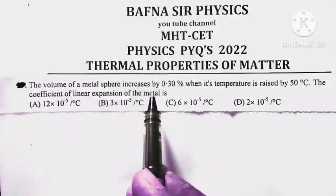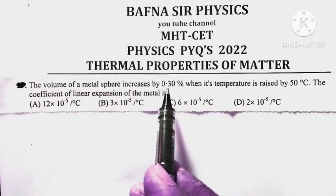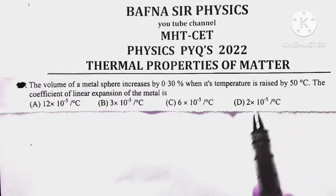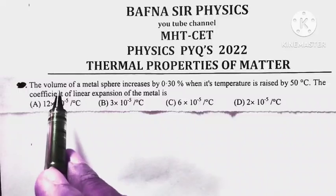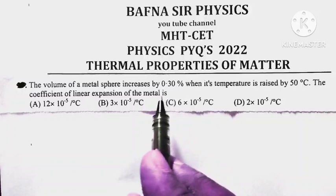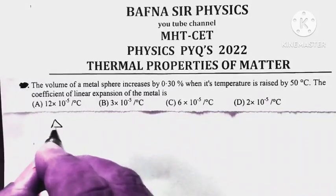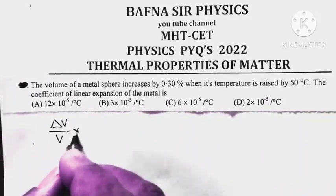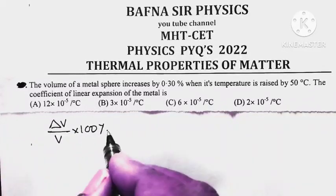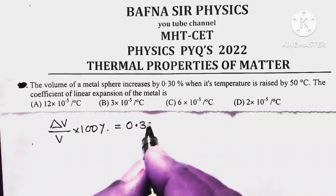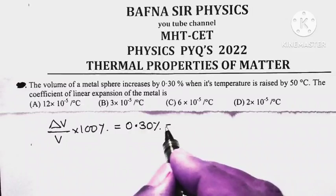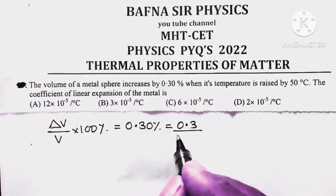The volume of a metal sphere increases by 0.30% when its temperature is raised by 50 degrees Celsius. The percentage change in volume means change in volume upon original volume multiplied by 100%, which is given as 0.30%, meaning it is 0.3 divided by 100.